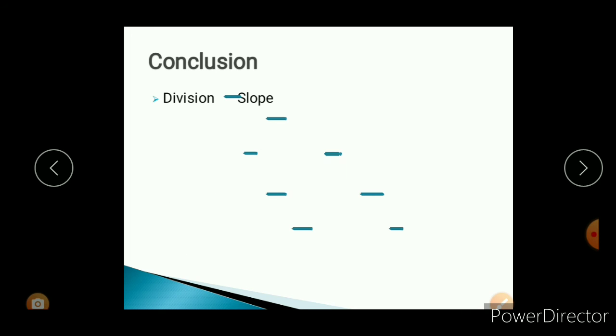Now some conclusions — you have to remember these conclusions. This is one type of rule; it is my own rule, not given in any textbook. You have to remember this for knowledge and you can apply it for any type of graph, not only distance time graph or velocity time graph. The first rule is: if there is division, then you have to find the slope; if there is multiplication, then you have to find the area.